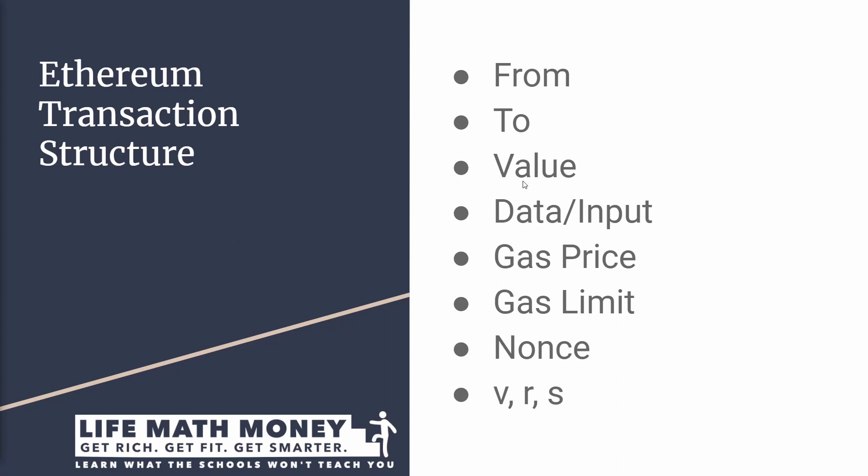Then we have the 'value' field, which is the amount of Ether to be transferred. The next field is 'data' or 'input.' When you're creating a new smart contract, the code of the new contract will go here. When you are calling an existing smart contract, this is where you put any input data that your contract might need. For those who know how to code, if the contract has multiple functions, here you will mention which function you're calling.